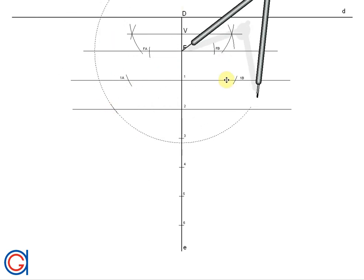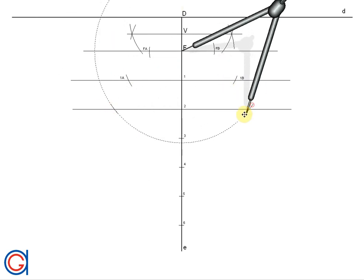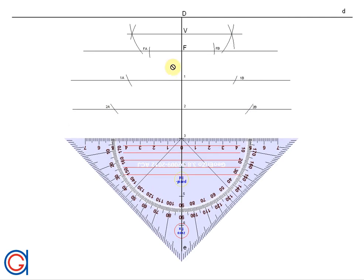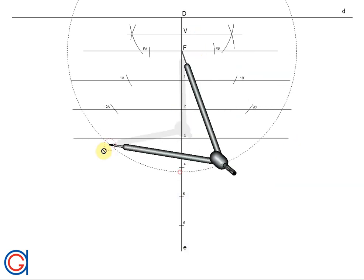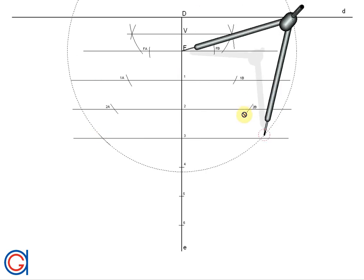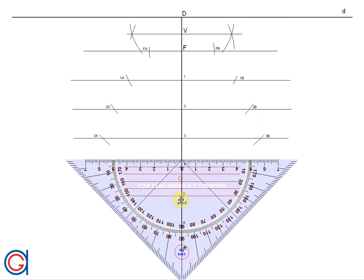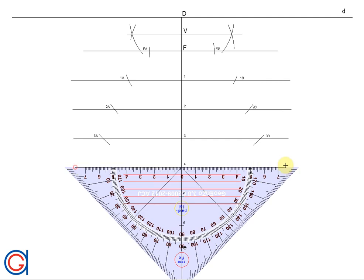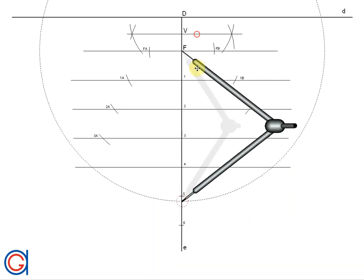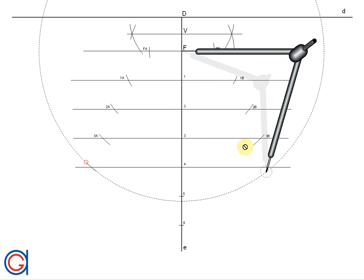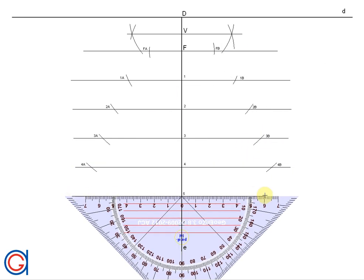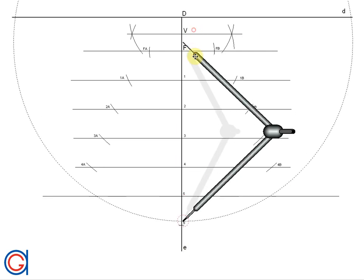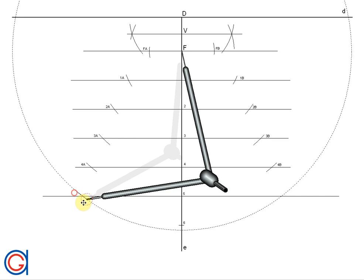And each of the points we will call 2A and 2B as can be seen here. And on the third division it will be 3A and 3B. Again here we can see 4A and 4B. Notice that we always center the compass on the focus point F while we are describing these arcs.